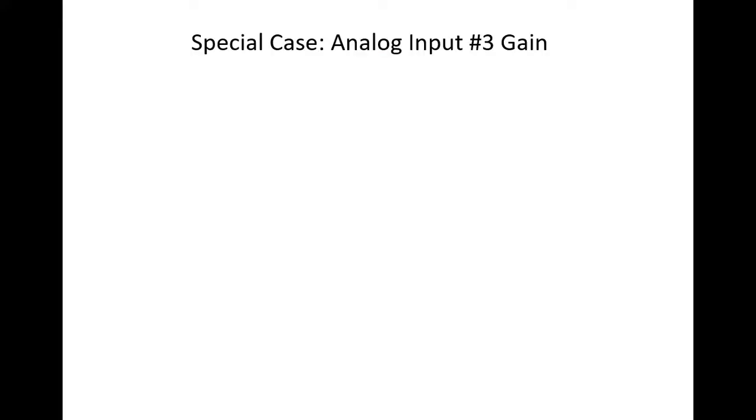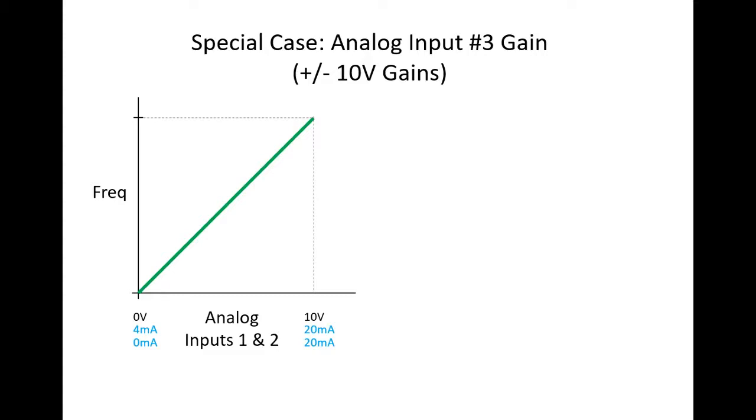Because analog input 3 can handle plus and minus 10 volts, it does gain a little differently than analog inputs 1 and 2. Gain and offset for inputs 1 and 2 are just the equation for a line. The gain is the slope and the offset is the y-intercept.